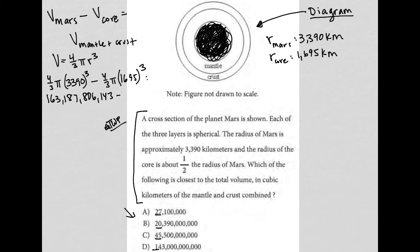So, now to the volume of the core. I have 1695 cubed, and then I'm going to multiply that by four-thirds as well, and then multiply that by pi. And I get 20,398,475,767. And really, again, I don't think it matters. These numbers are so different from each other.